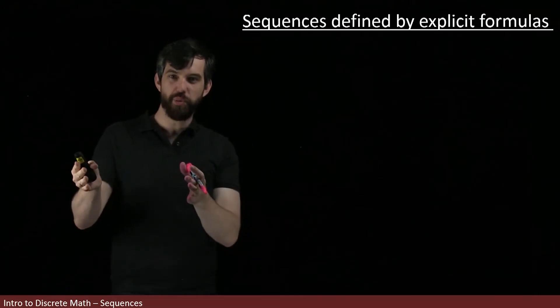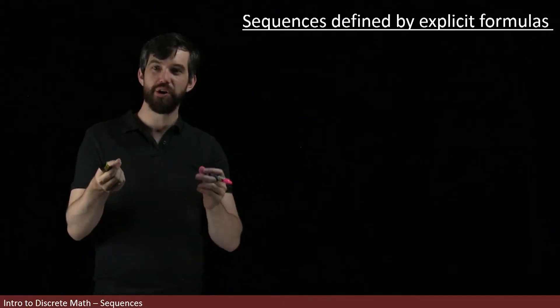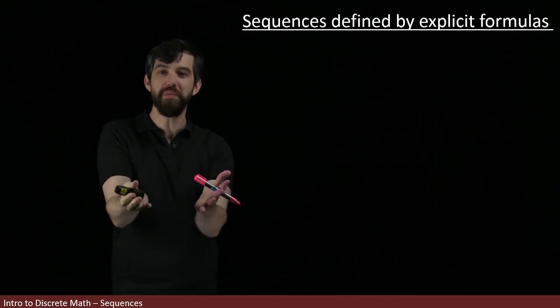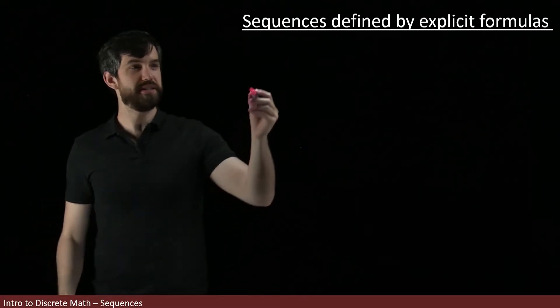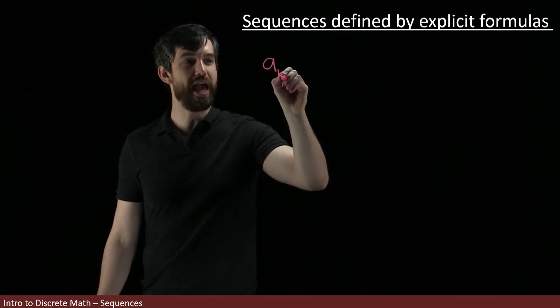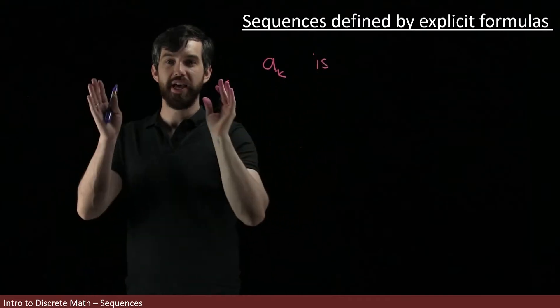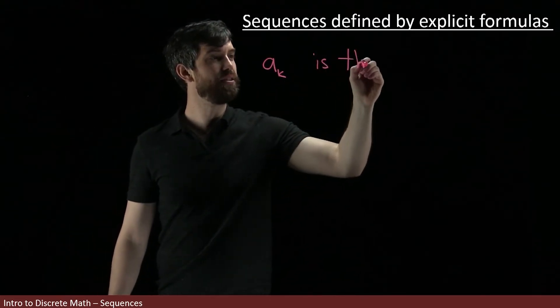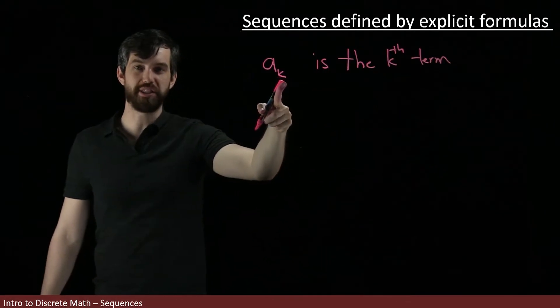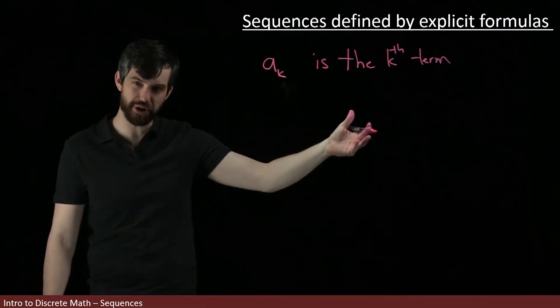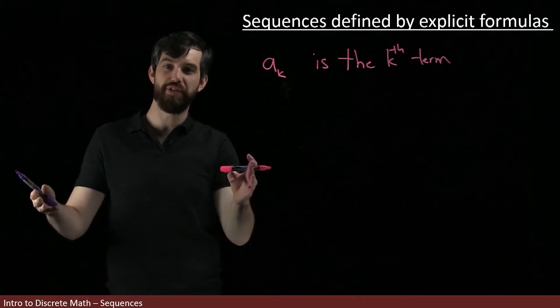In the previous examples, we sort of picked up the pattern of the sequence just by looking at the first couple terms. But sometimes what we do is write explicitly down what the formula for the particular sequence is going to be. So in order to do this, I need a little bit of notation, which is the symbol a sub k. And what a sub k is going to refer to, this is going to be the k-th term of my sequence. So if I want to have an explicit formula, what I need to do is I need to tell you what are all of the a_k's.